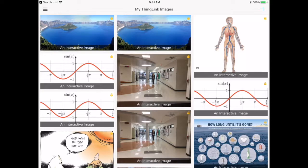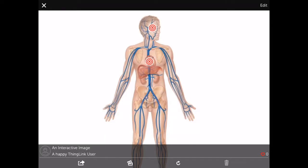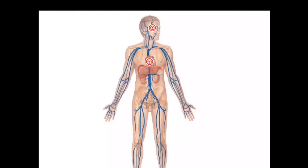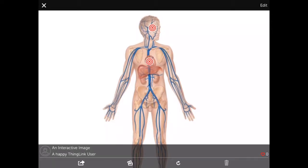So to create a ThingLink, I'm going to hit the plus button in the upper right-hand corner. Actually, I should probably show you what a ThingLink is first. Let's take this ThingLink of an interactive body. You'll notice I have this diagram of a body with all these little bullseye target things on there — these are the links. ThingLink is exactly what it says: you can link different things to a diagram. Here I have the term 'superior' and 'heart' over the heart. You can insert videos, other pictures, and all kinds of different things to make an interactive diagram.